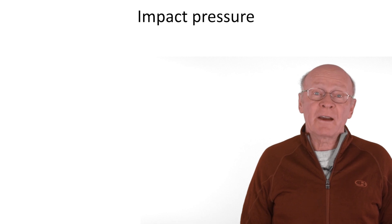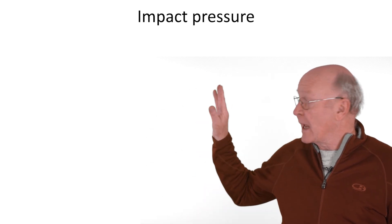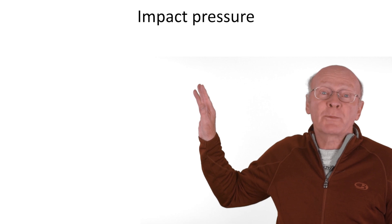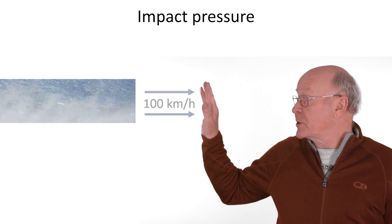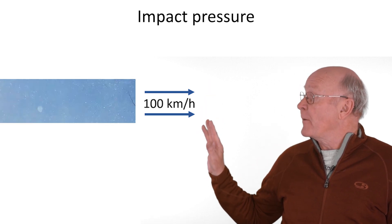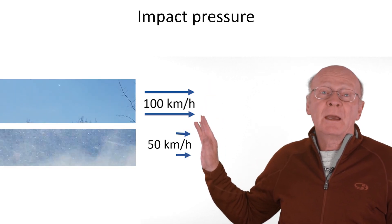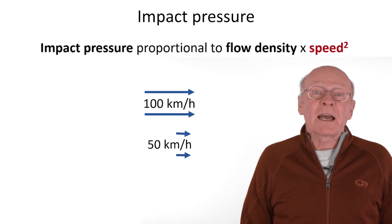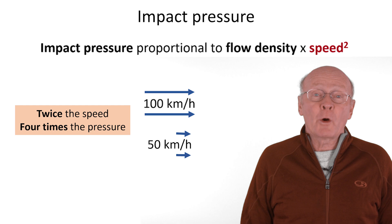When I was a kid traveling in the car, I would hold my hand out the window to feel the pressure from the wind. I noticed that the pressure at 100 kilometers per hour was much higher, more than double the pressure than at 50 kilometers per hour. That is because for liquids, gases and snow avalanches, the impact pressure is proportional to the flow density times the speed squared. So when the speed doubled, the pressure on my hand would be about four times higher.